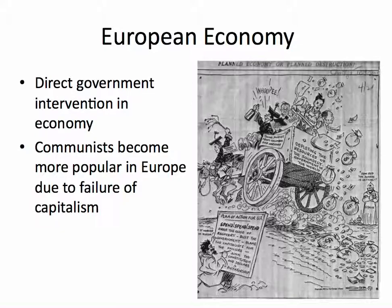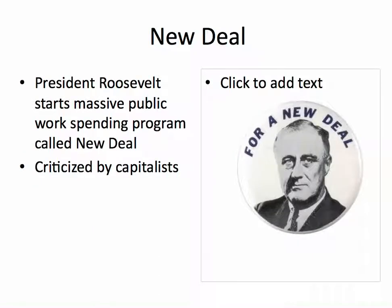This happens in Europe as well. They realize that government needs to be involved, and there is direct intervention from the government in the economy. The communists become more and more popular in Europe due to the failure of capitalism — capitalism is viewed as a great failure. The government starts to take direct control of the economy, and we actually copy this in the United States, as do Great Britain and France, with massive government spending called the New Deal. Most famously, Franklin Delano Roosevelt — that was his slogan for the New Deal and his political campaign. This is criticized by capitalists because of the massive amounts of government spending involved.